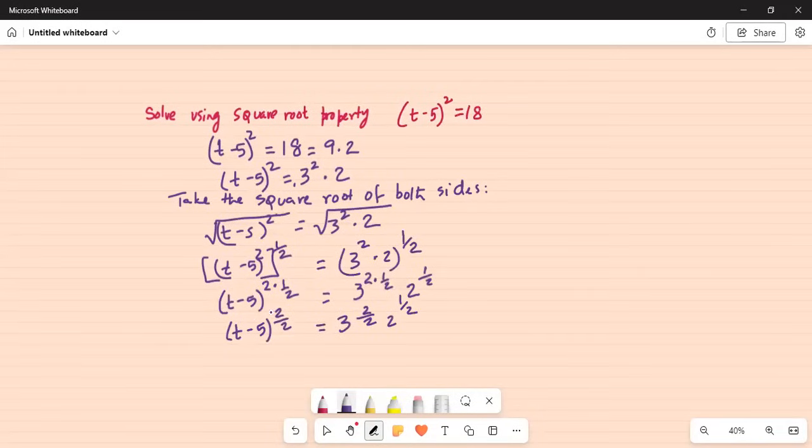So 2 cancels with 2, this 2 cancels with this 2, we get t-5 is equal to 3, 2 to the power of half, which can be written as 3 square root of 2.